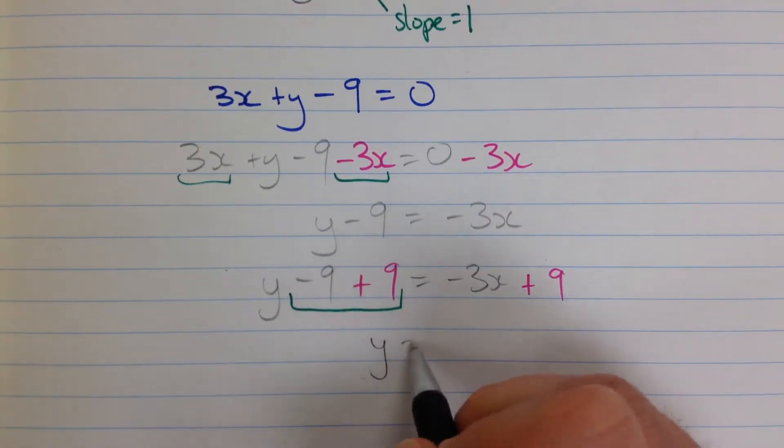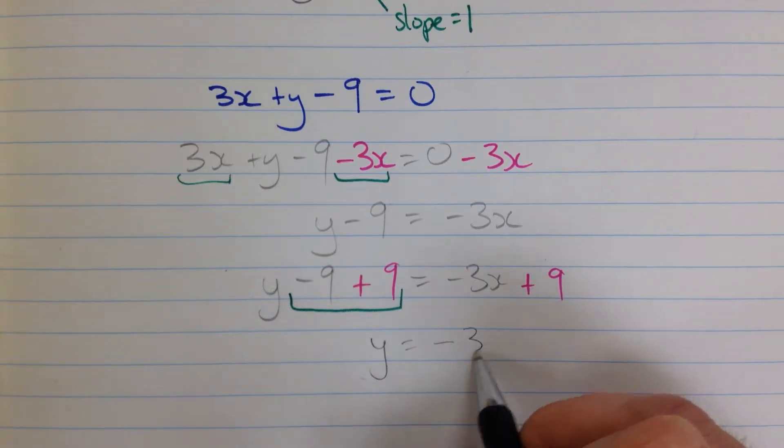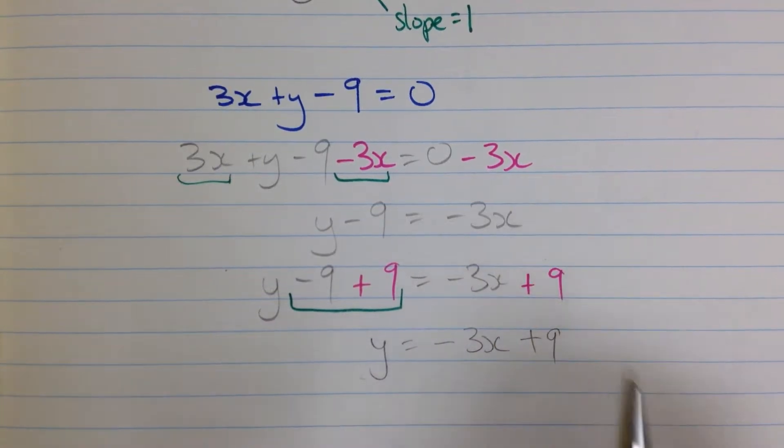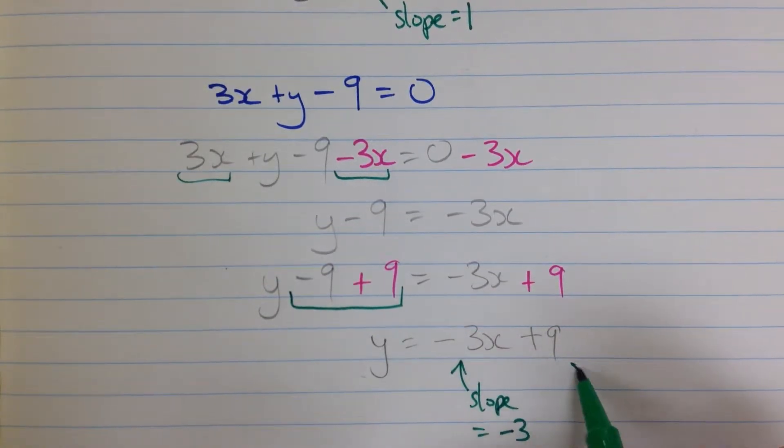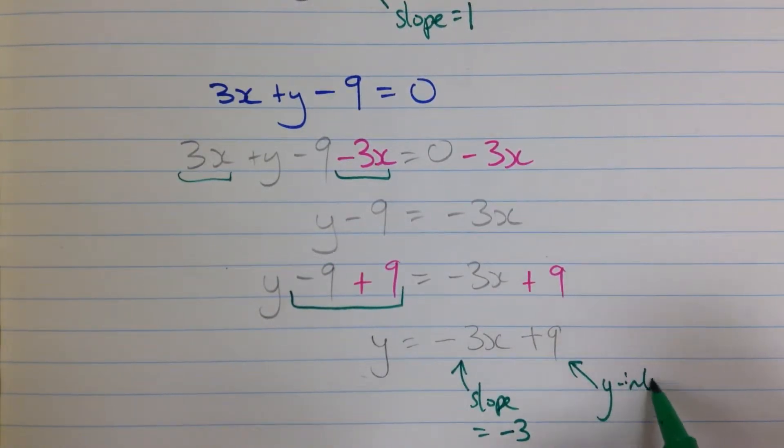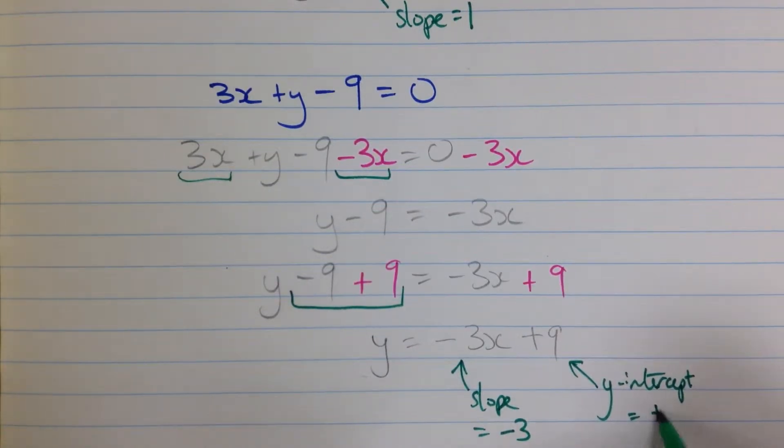So I'm left with y equals negative 3x plus 9. My slope here is negative 3. And my y-intercept is positive 9.